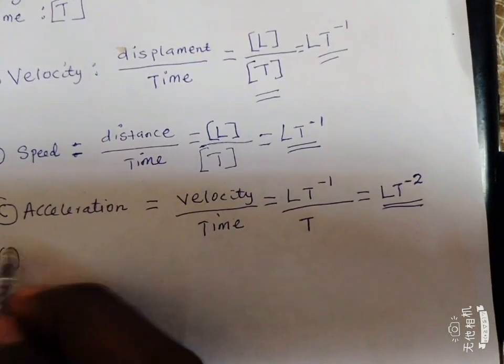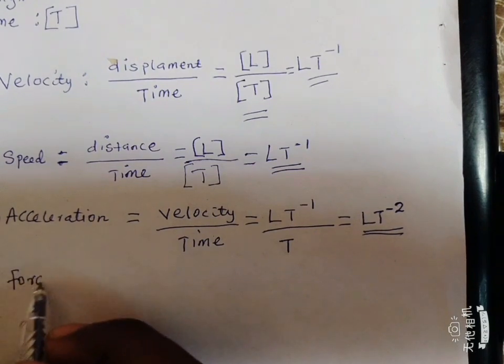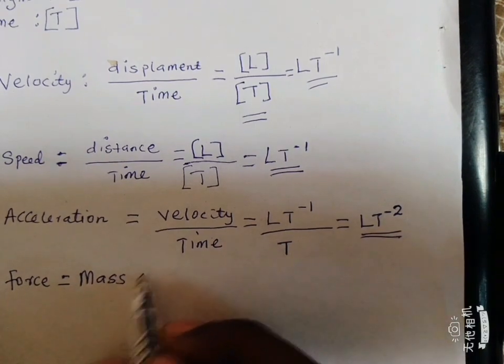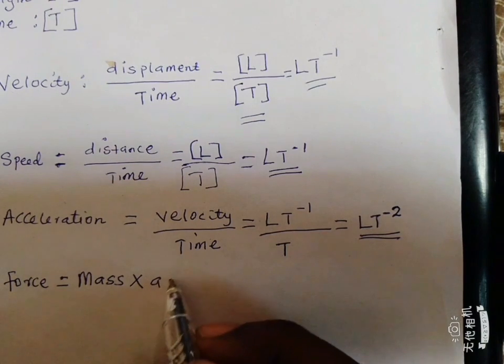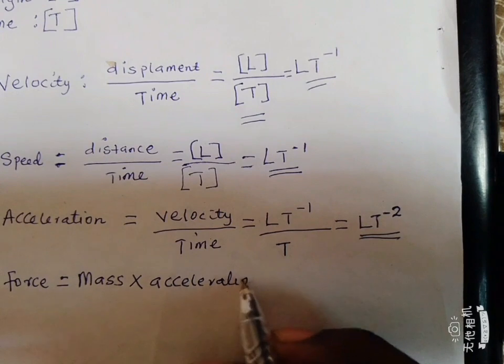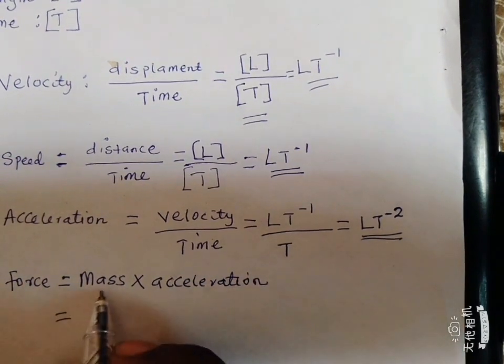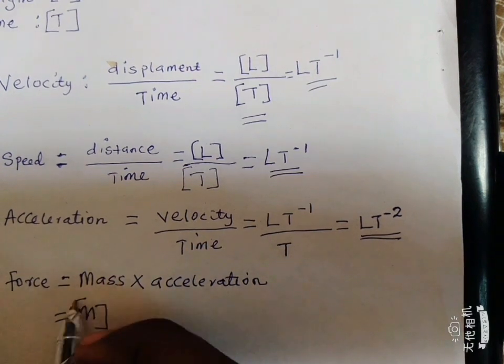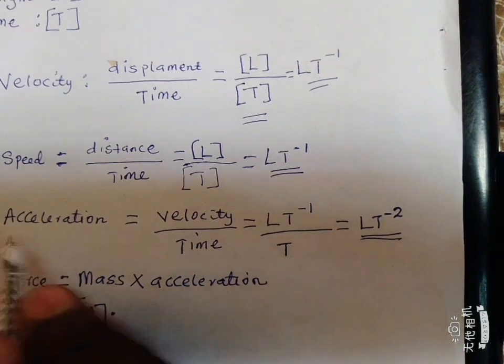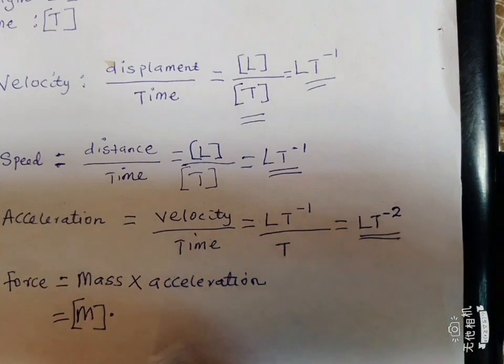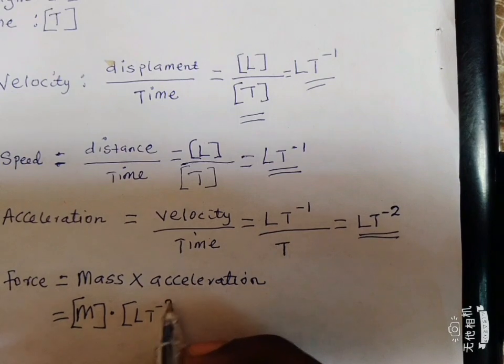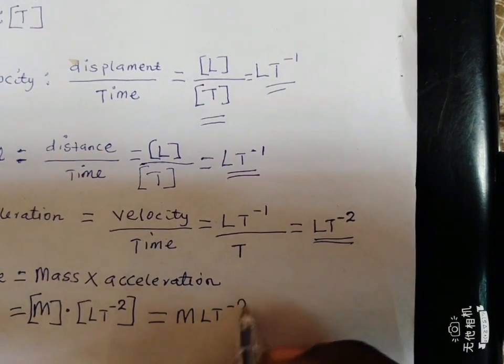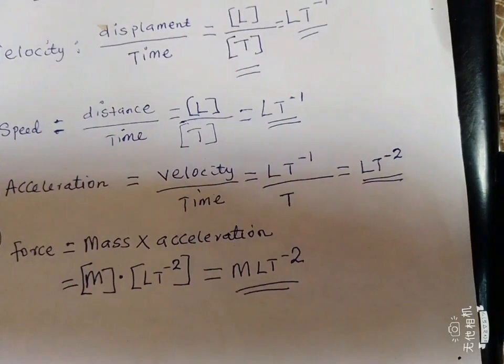Now let's look at the D part of it, the dimension for force. Now what is force? Force can be defined as the product of mass and acceleration. Now your mass, based on dimension, is M. So we have our M enclosed in brace brackets. Then multiply acceleration. Look at acceleration here, it's L T negative 2. Which now becomes M L T negative 2. So this becomes the dimension of force.